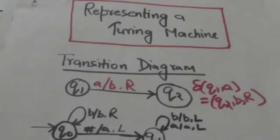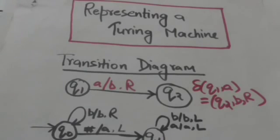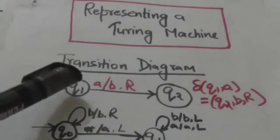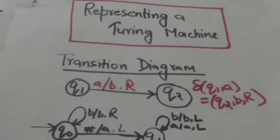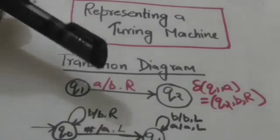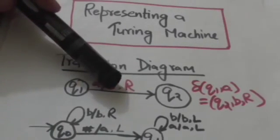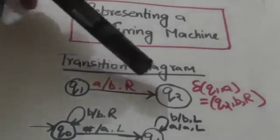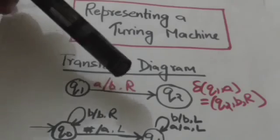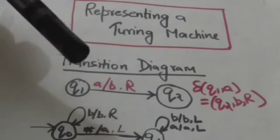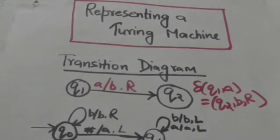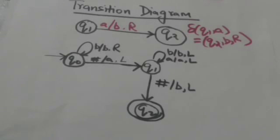To represent this transition in the transition diagram, we draw a directed edge from the node representing state q1 to the node representing state q2. This edge is labeled by the tape symbol the Turing machine reads — that is A — slash the tape symbol by which it replaces A — that is B — comma, and then the direction of movement of the read/write head, that is R.